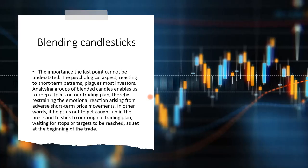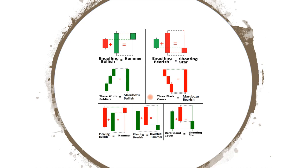The psychological aspect cannot be understated — reacting to short-term patterns plagues most investors. Forget the patterns, look at the combination of candles. Try combining three, four, five, or six candles — it doesn't matter if there are reds and greens mixed in. Open of the first candle, close of the last candle, highest wick, lowest wick — that gives you the new summarizing candle telling you what the market is saying over those periods. Add this to your trading along with some trend analysis and support and resistance, and you might have an easy, successful trading strategy. Thank you for joining us and have a great trading day.